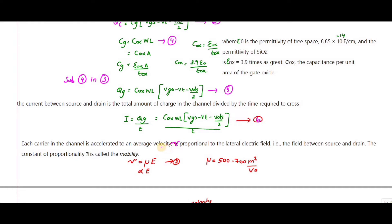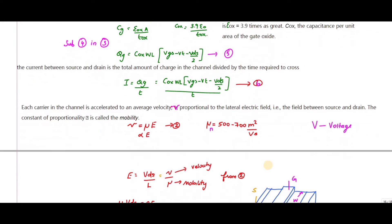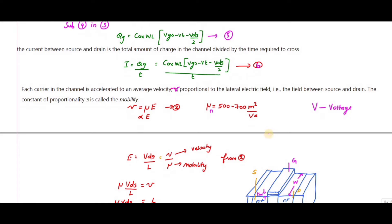Each carrier in the channel moves at an average velocity v (lowercase), where capital V represents voltage. This average velocity is proportional to the lateral electric field E: v = μ × E, where μ_n (electron mobility) is approximately 500 to 700 cm²/V·s. The electric field E = V_DS / L.